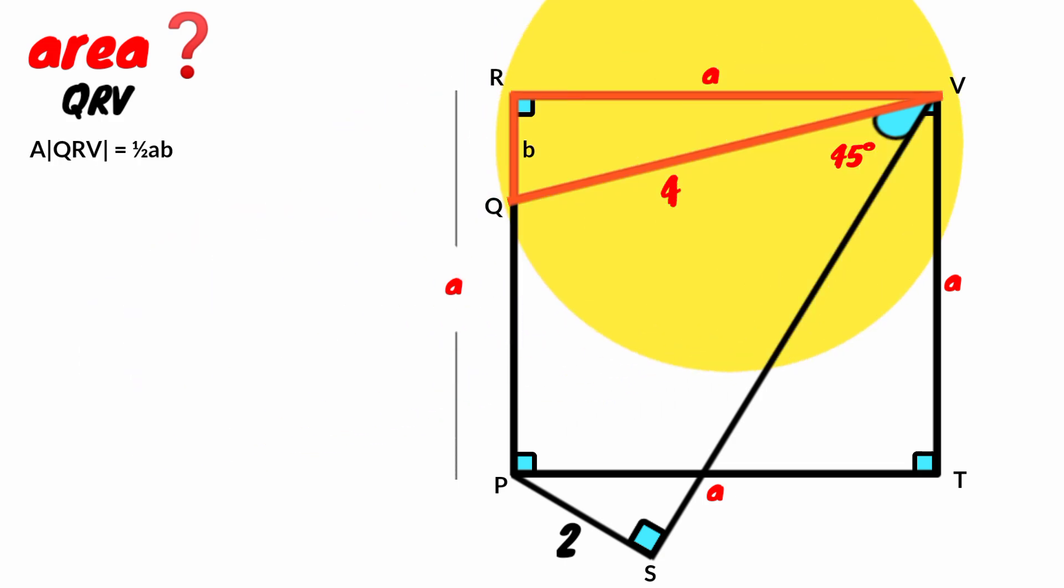Still on triangle QRV. Since it is right, we can use SOHCAHTOA on it. Take in this angle as theta, say X.